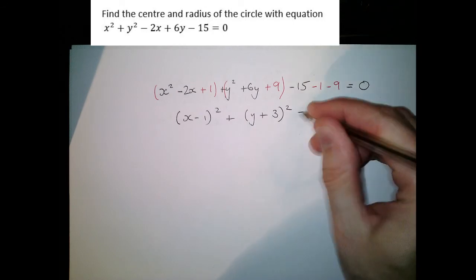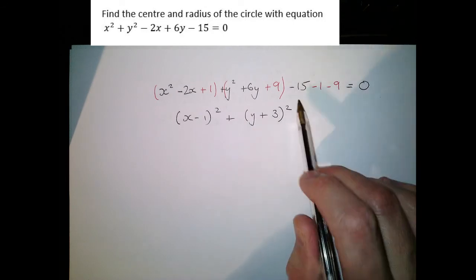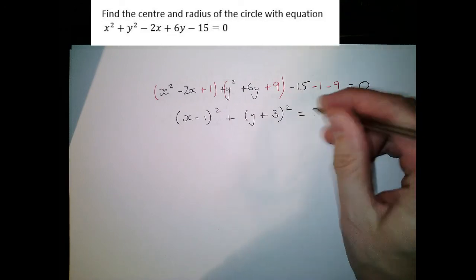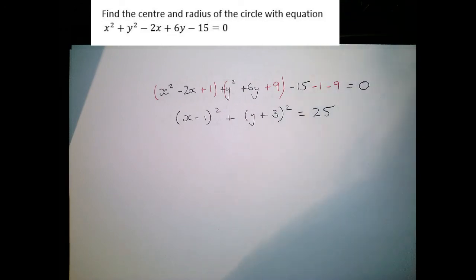We've then got, we'll take these over to the other side, we've got a plus 15 plus 1, that's 16 plus 9, that's 25 and so there we have, this is the equation of a circle, that's the form we want it.